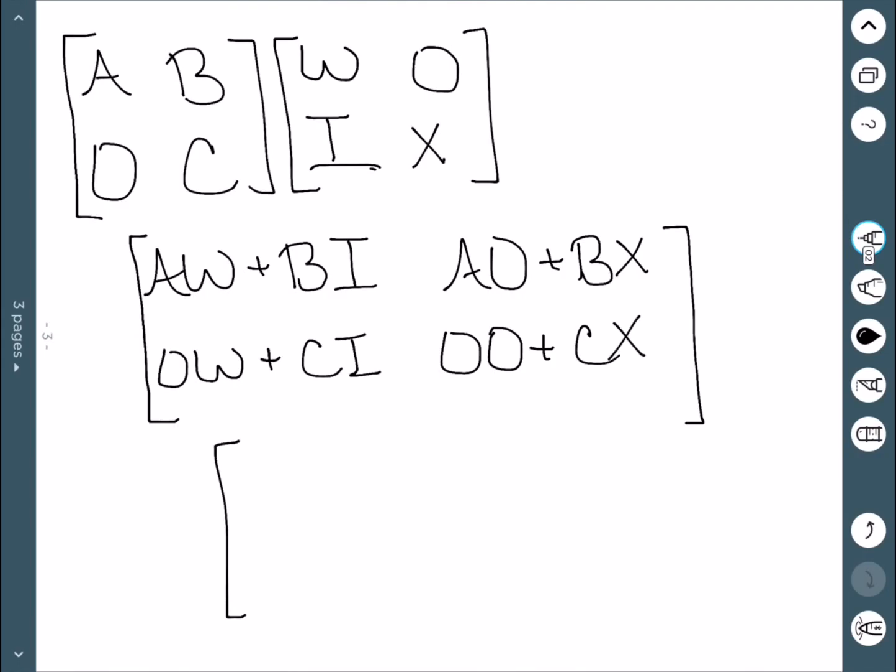We can then simplify this. Anything times the identity matrix is itself, and anything times zero is zero. So this is what I end up with after our multiplication, this matrix AW plus B, BX, C, and CX.